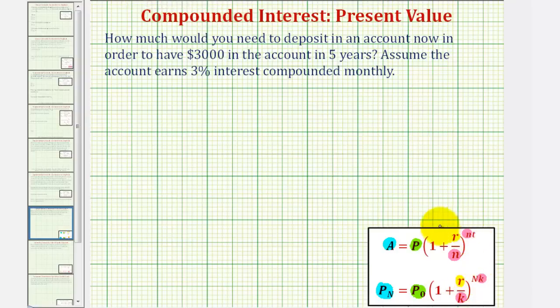And then finally, in this first formula, lowercase t is time in years. In the second formula, capital N is time in years. To be consistent with our text, let's go ahead and use this formula here.